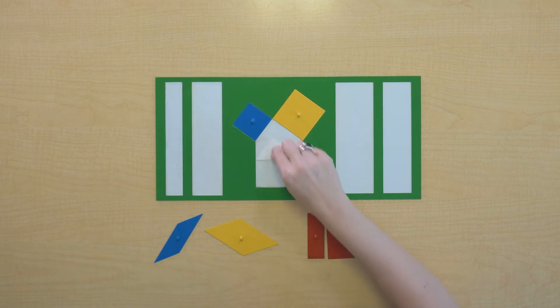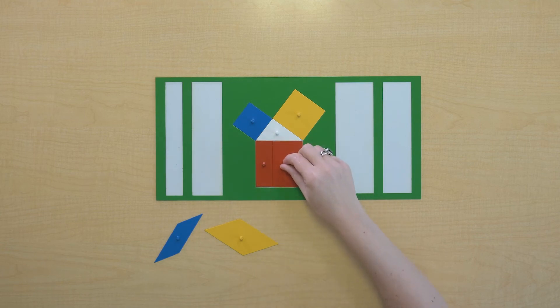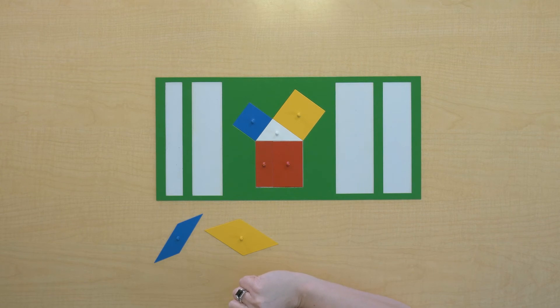Now let's focus on this yellow square. I want to see if one of these parallelograms is equivalent to this yellow square.